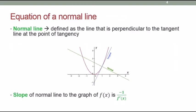The normal line is defined as the line that is perpendicular to the tangent line. Looking at the graph, the normal line is the green line and the tangent line is the blue line. The slope of the normal line to the graph of f(x) is equal to negative 1 over f'(x).